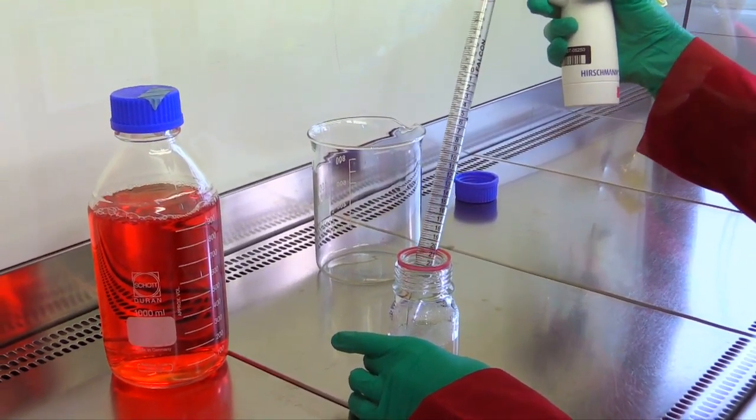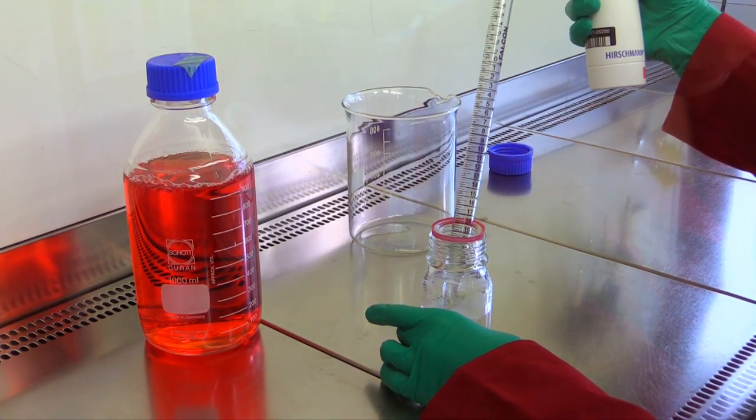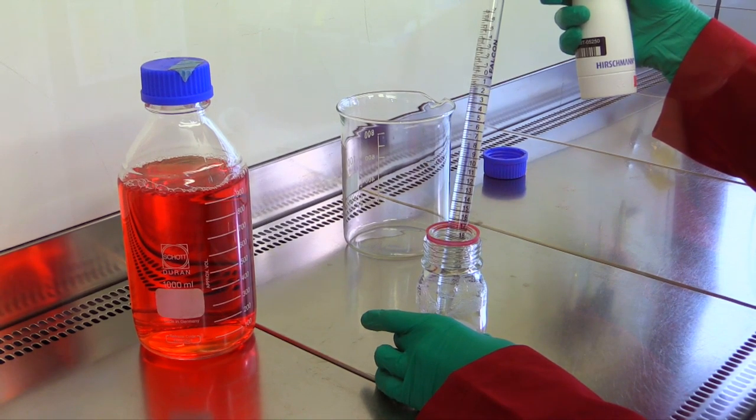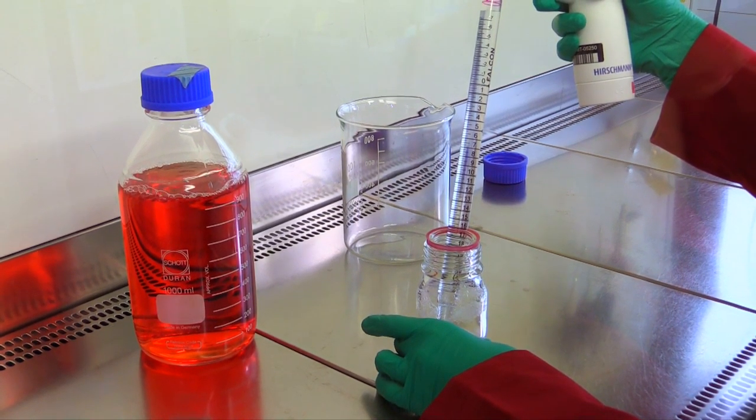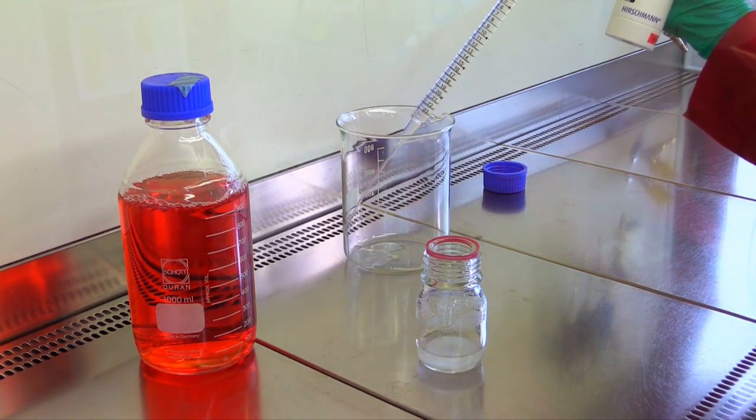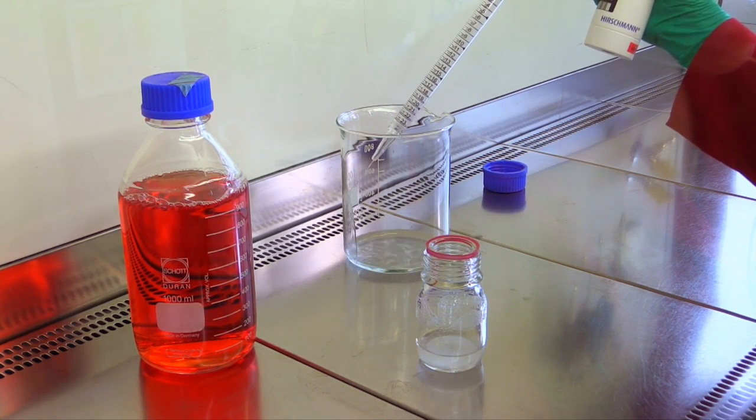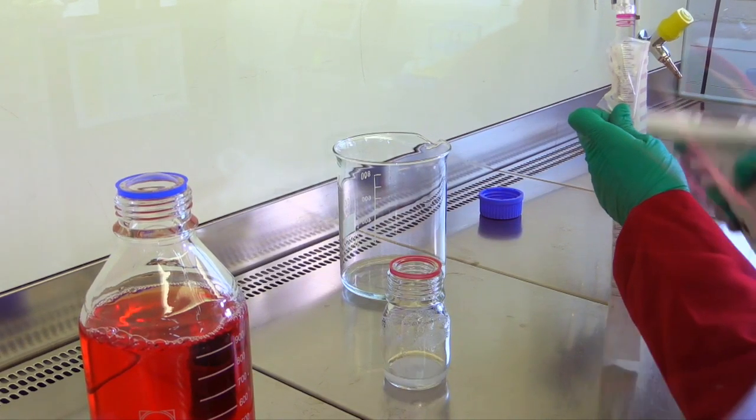Before transferring the sterilized microcarriers into the spinner flasks, they have to be washed one to two times with the culture medium that was specially designed by Lonza. Therefore, the microcarriers are allowed to settle, the supernatant is carefully removed with the pipette, and the carriers are rinsed in the culture medium.